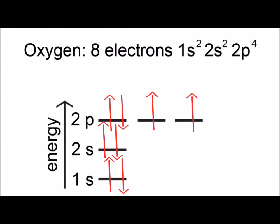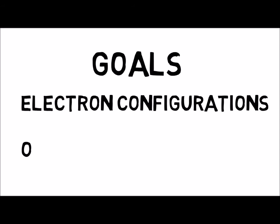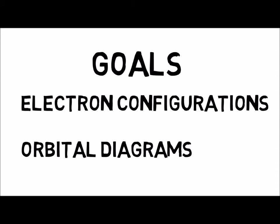Now you know the basics of electron configurations and orbital diagrams. You should be able to write electron configurations and draw orbital diagrams for all of the main group elements, including ions, using this method. Thank you.